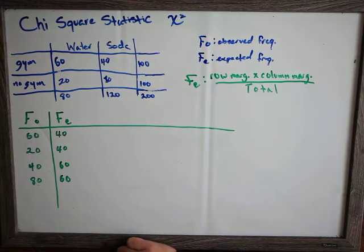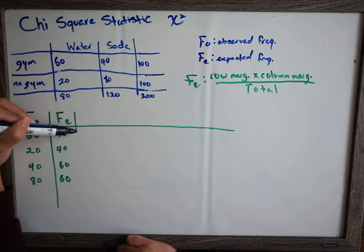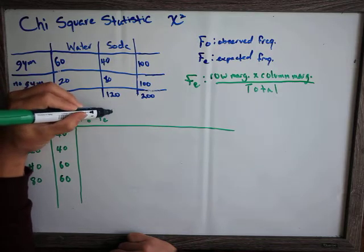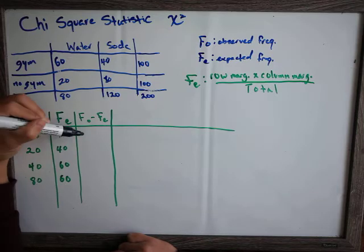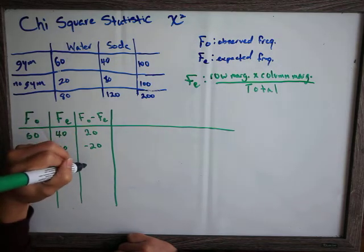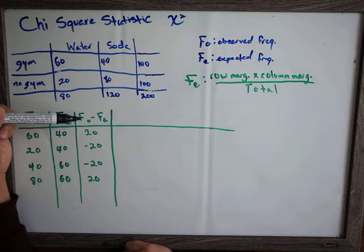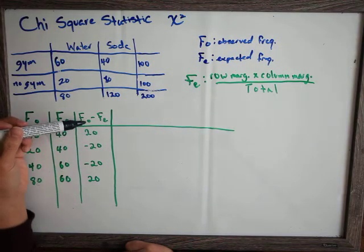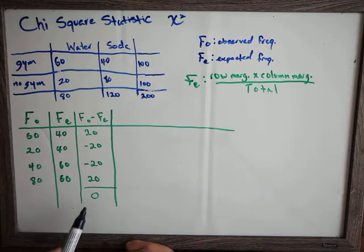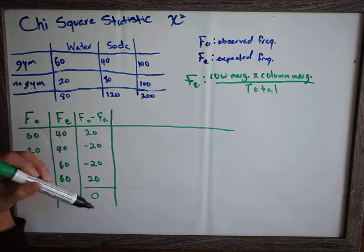Those are our first two columns, and that's basically all you need to find a chi-square. Next, we do observed frequency minus expected frequency: 60 minus 40 is 20, 20 minus 40 is negative 20, 40 minus 60 is negative 20, and 80 minus 60 is 20. When making this table, this column should always sum to 0 — because 20 minus 20 is 0, and negative 20 plus 20 is also 0.